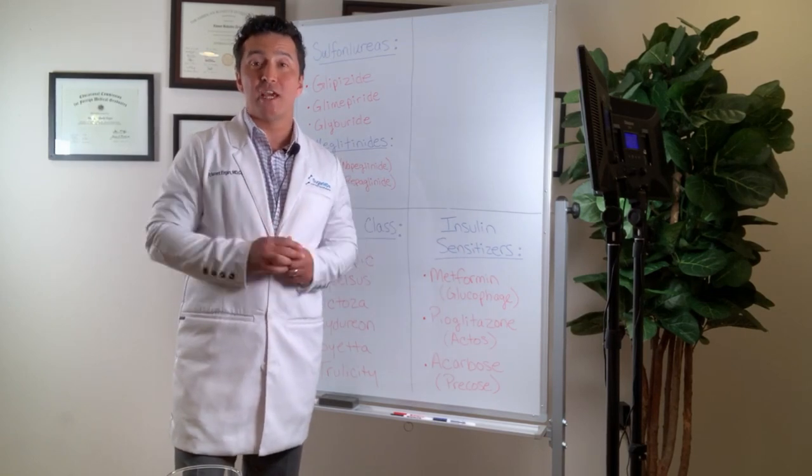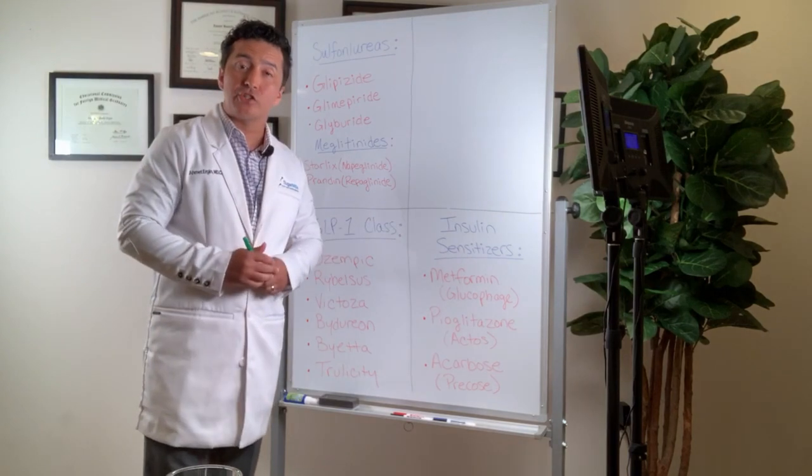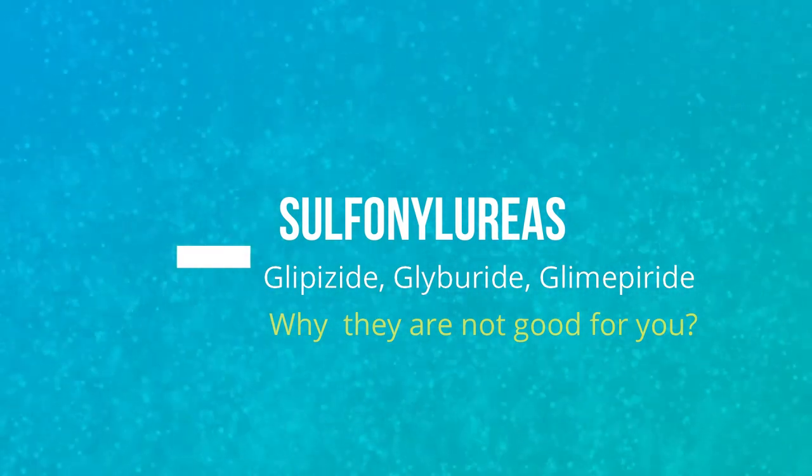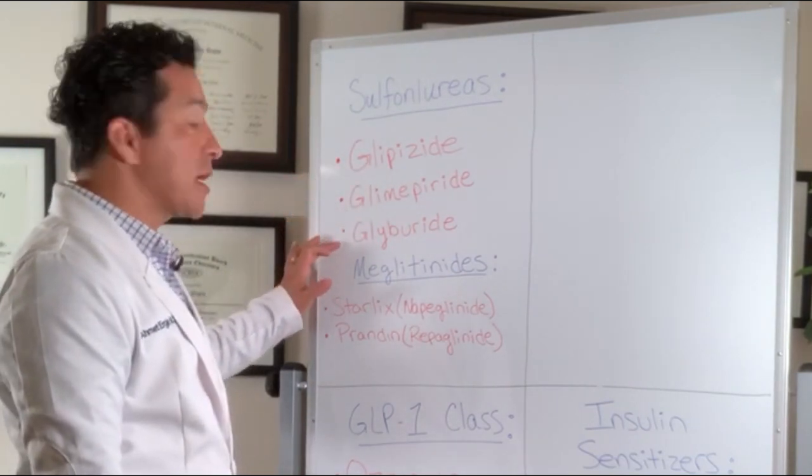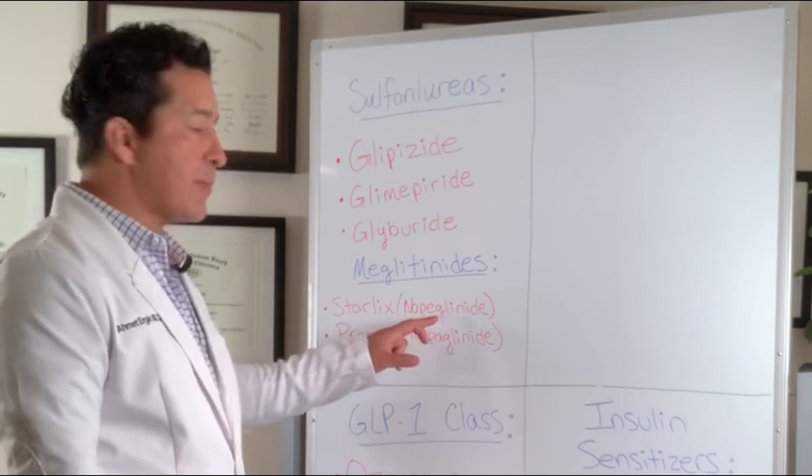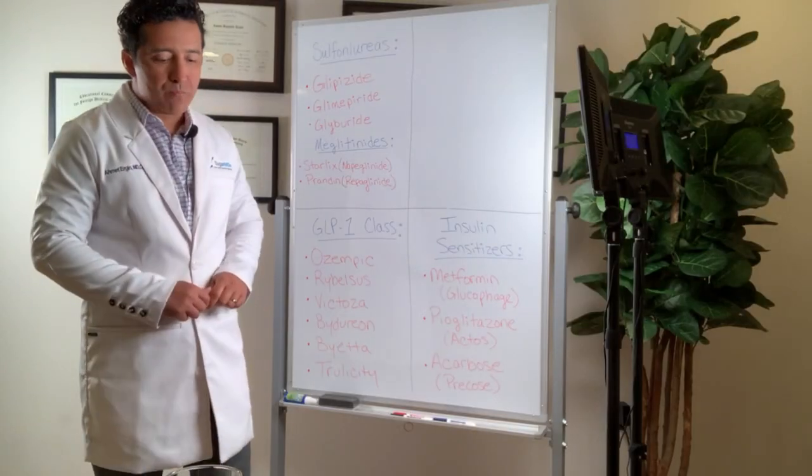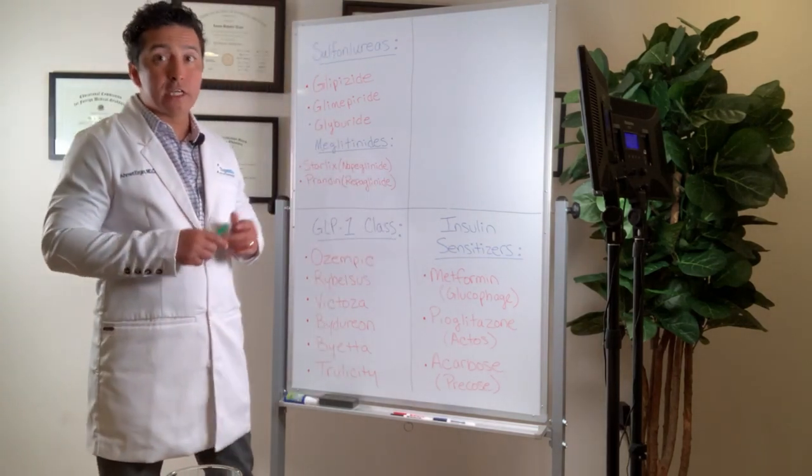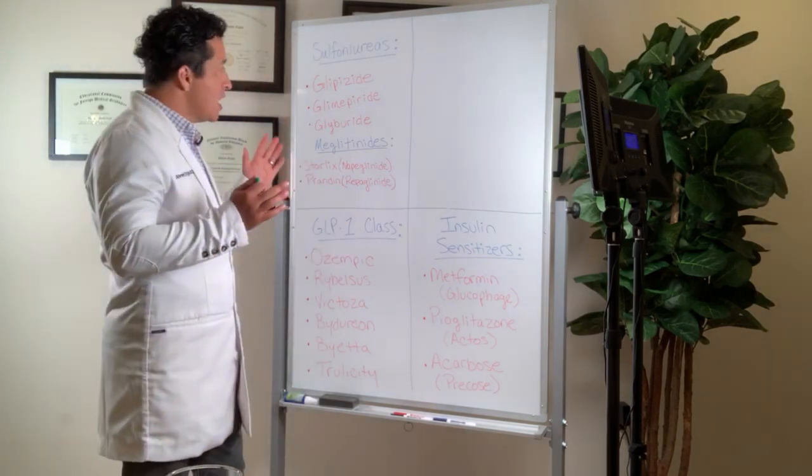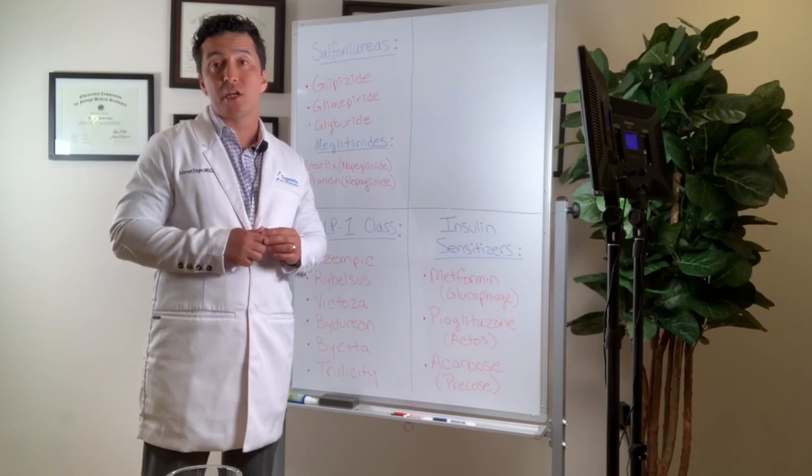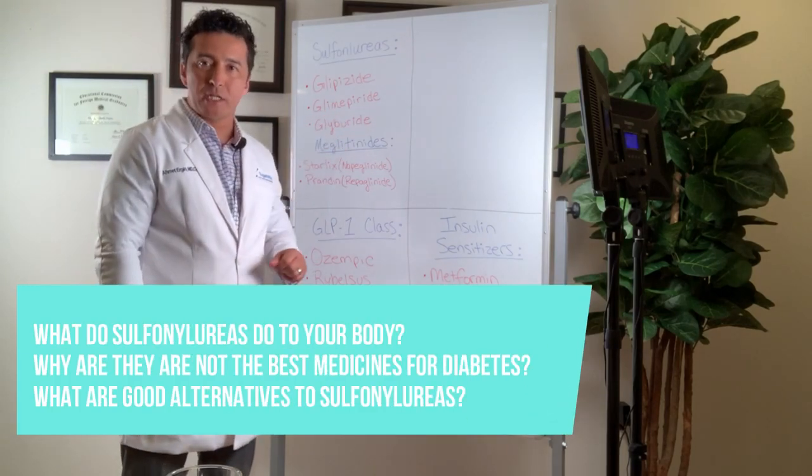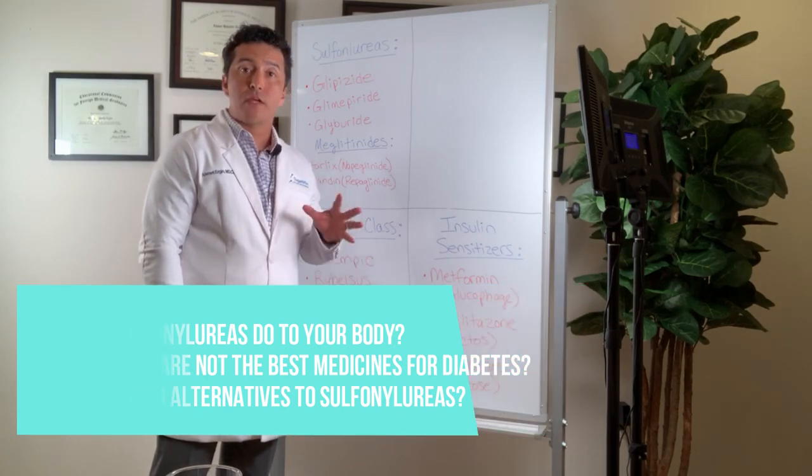Welcome to SugarMDs. Today I'm going to talk to you about some of the medications that you guys have been prescribed quite often. And the topic is the sulfonylureas. So sulfonylureas most commonly are glipizide, glyburide, and glimepiride. And meglitinide is almost like a subgroup of sulfonylureas. And these are like Starlix, which is nateglinide, and Prandin, which is repaglinide.